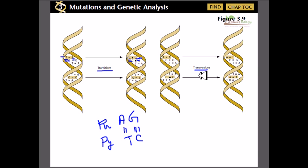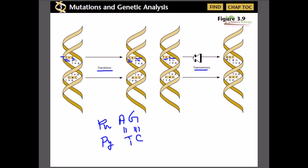That is why it is called a transition — the replacement is done by the same type of base. In transversion, a pyrimidine is replaced by a purine and a purine is replaced by a pyrimidine. Here, T which is a pyrimidine is replaced by A which is a purine, and A which is a purine is replaced by T which is a pyrimidine. The replacement uses a different type of base, which is why we call it transversion.